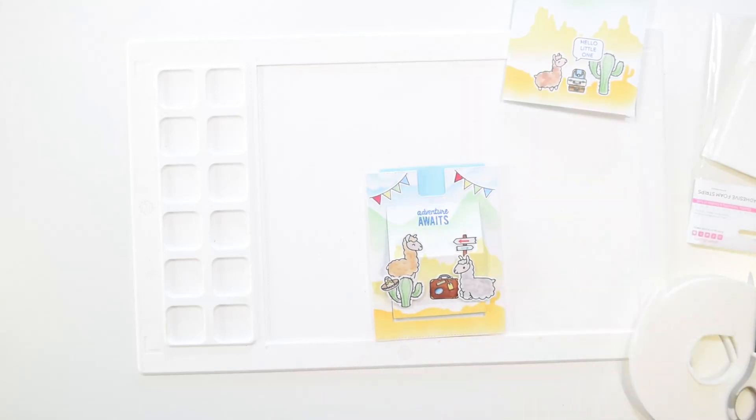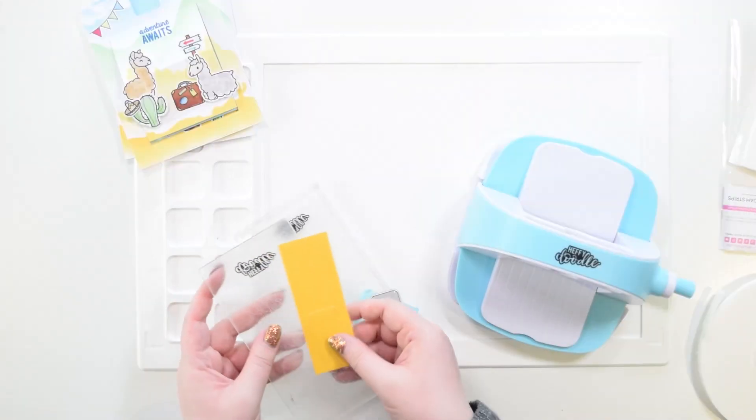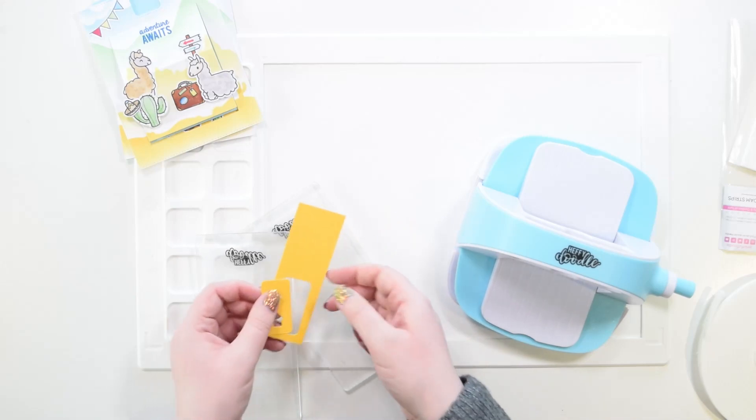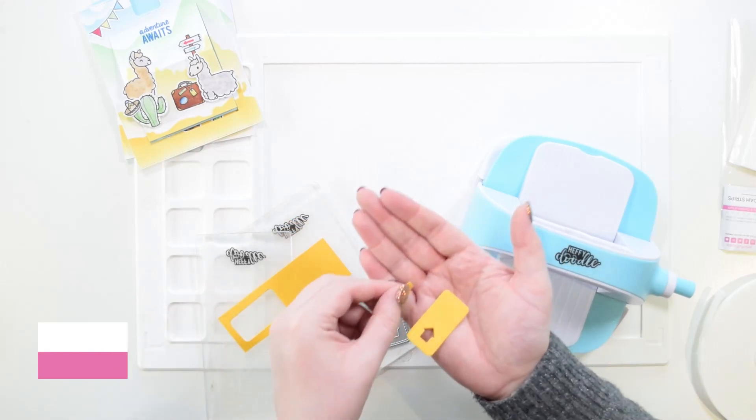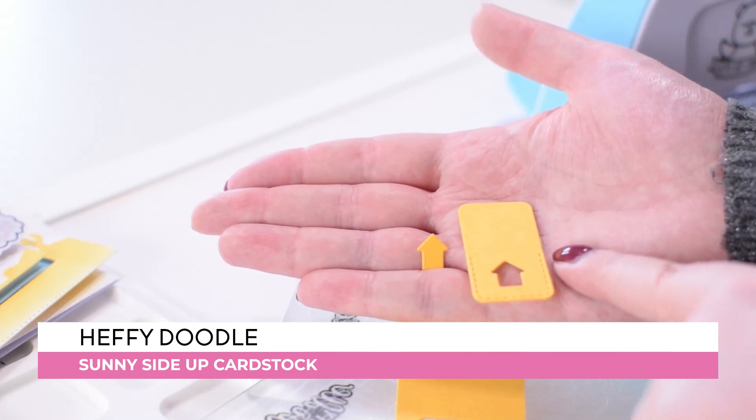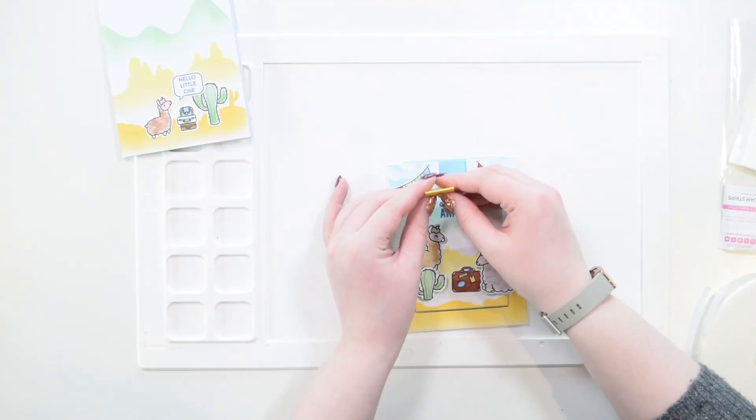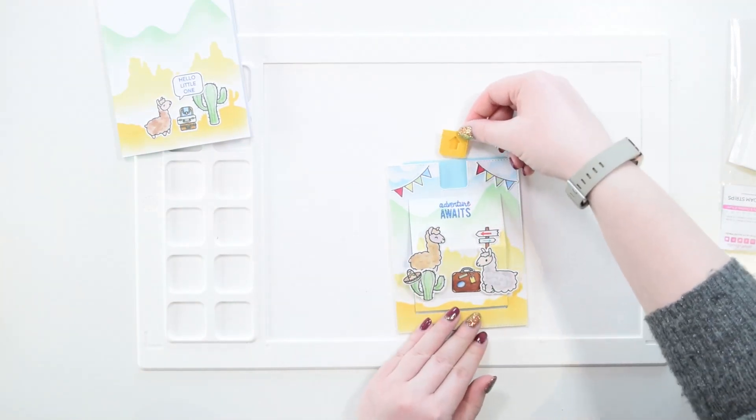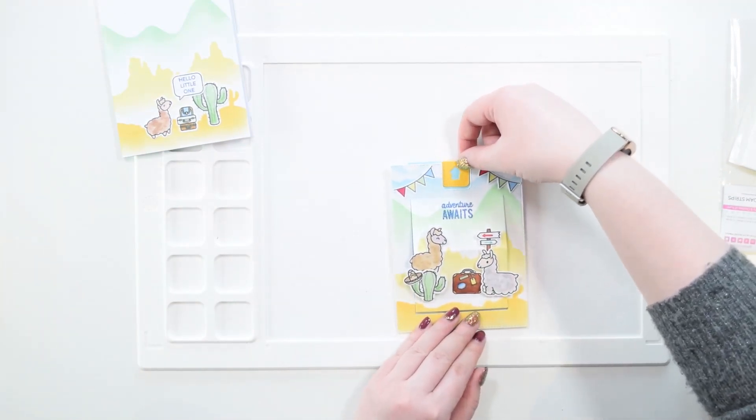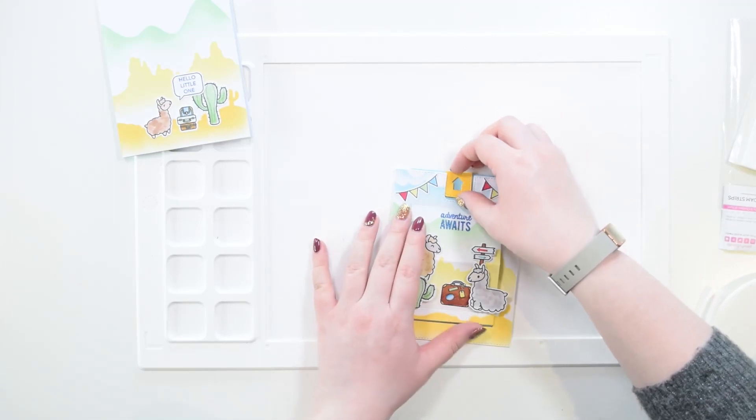So I'm taking some yellow cardstock, this is Sunnyside Up, and I have die cut out this arrow tab and the tiny arrow insert too. I'm going to use just the outer tab for this and save that little arrow for a rainy day.